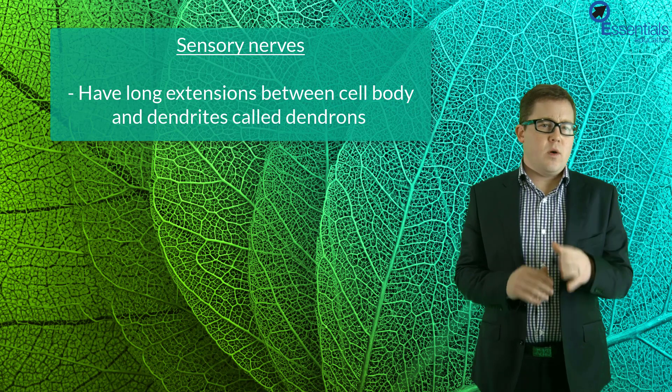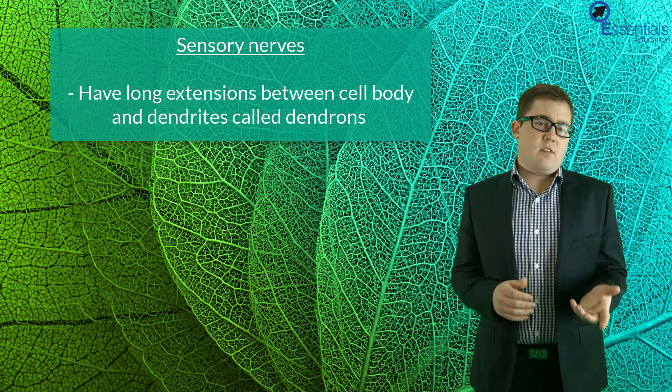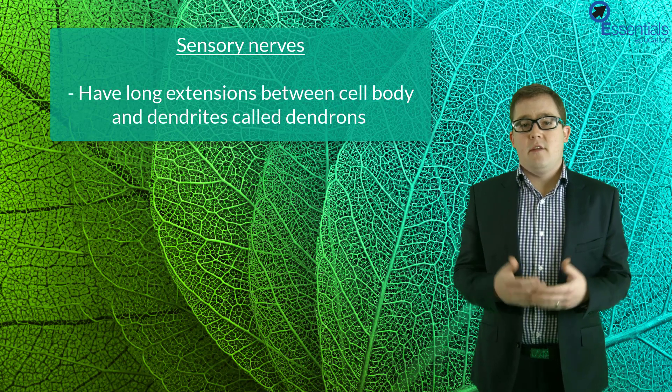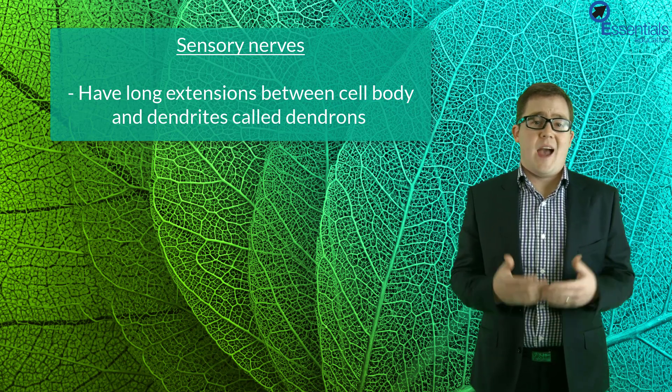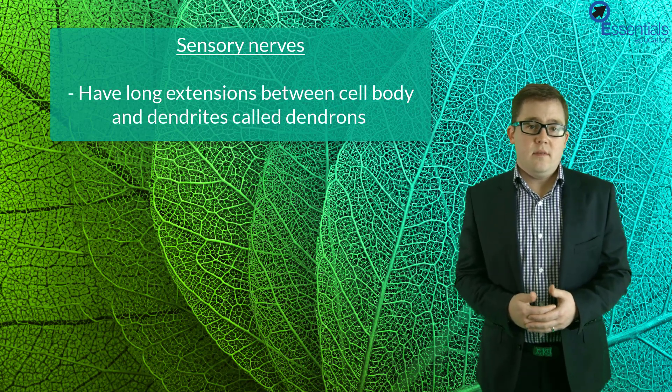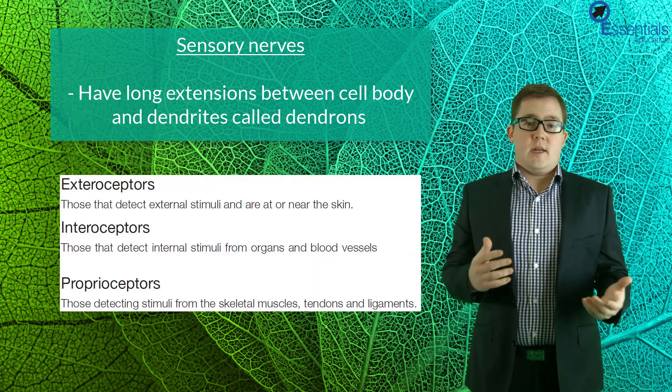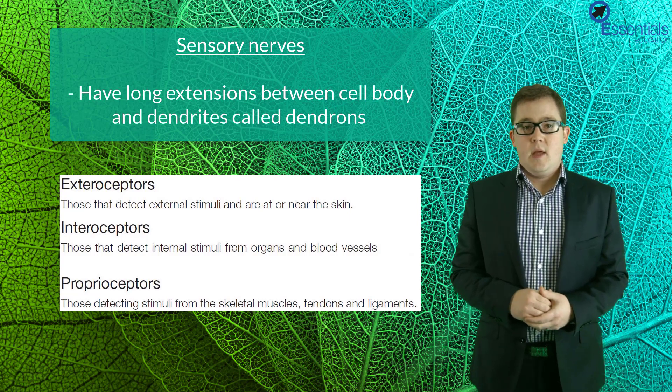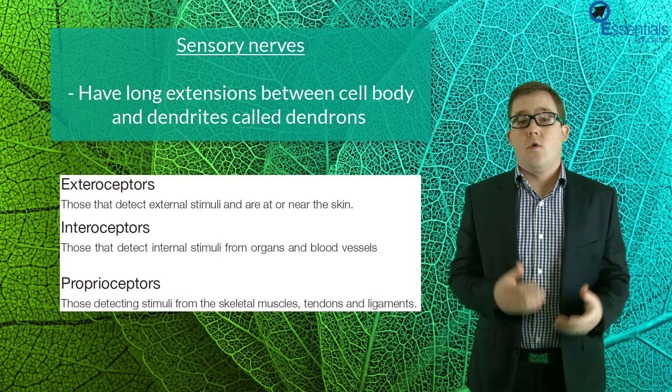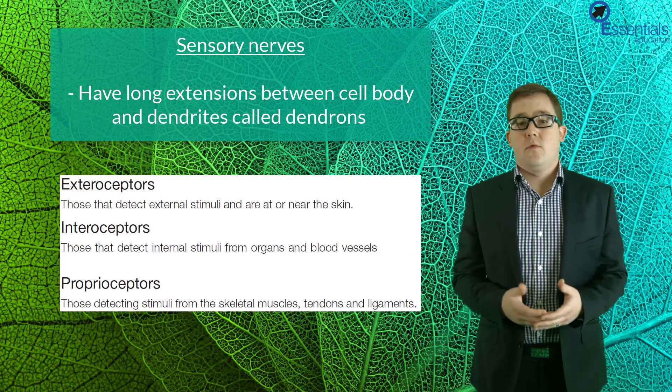Let's actually stop here for a bit and talk about these receptors because they are really important in allowing your body to detect changes in the environment. We talked last video about the stimulus response model and how important it is in allowing us to respond to changes, and it certainly would not be possible without the dendrites of sensory nerves to act as receptors of a stimulus. There are actually three different types of these sensory receptors and they are generally classified by their location. The first are called exterior receptors which detect external stimuli and are located near your skin. The second are called interior receptors that detect internal stimuli and are located near your organs. And the third are called proprioceptors which detect stimuli from skeletal muscle and ligaments.